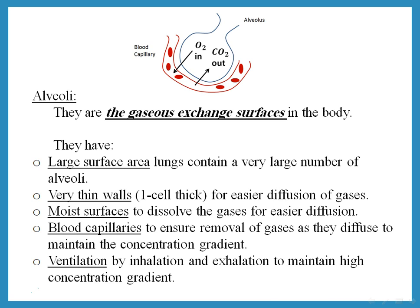Ventilation means air keeps going in and out of the alveoli — you breathe in and breathe out constantly. This ensures lots of oxygen is always present in the alveoli so it can diffuse into the blood, and carbon dioxide that diffuses out of the blood is carried away, maintaining the concentration gradient.